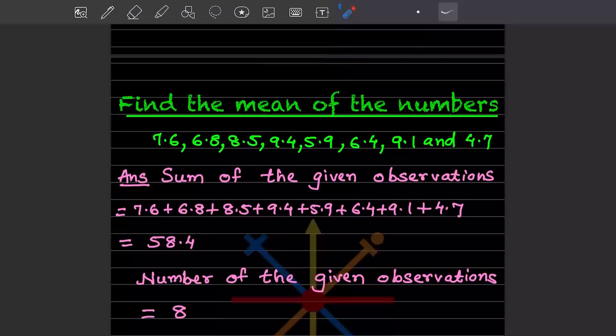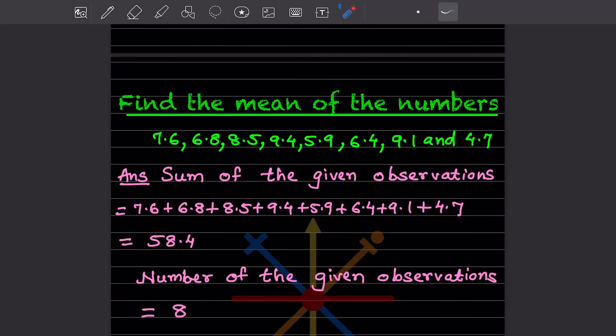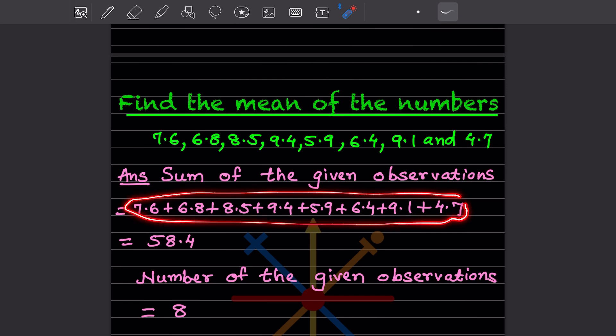First, what are we going to do? We are just going to add all the numbers. That is the sum of the given observations. You will add all the numbers. After adding it, you get 58.4.